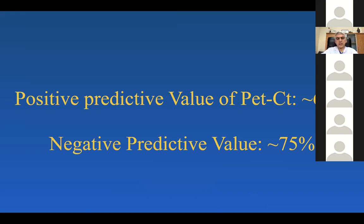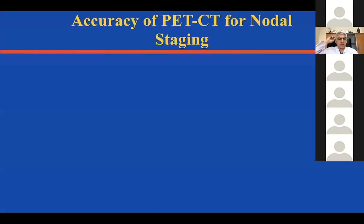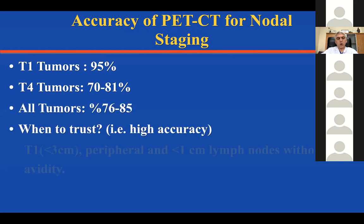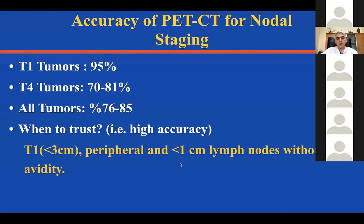The negative predictive value of PET-CT is about 75% — not bad but not adequate. We rely on PET-CT only for T1 tumors: peripheral tumors with lymph nodes smaller than 1 cm without FDG avidity. For other tumors, we do formal nodal staging. Endobronchial ultrasonography EBUS-TBNA is basically a fiber optic bronchoscopy with ultrasonography on the tip of the bronchoscope and a channel for a fine needle. Bronchoscopists can see the lymph node and take biopsy from it. It is non-invasive but not perfect.